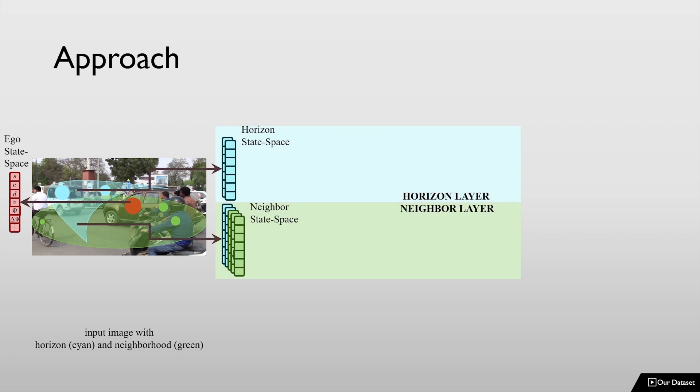Our network constitutes a horizon layer and a neighborhood layer. The horizon layer processes all the agents inside the horizon and models the horizon-based weighted interaction. The neighborhood layer performs a similar function for all the agents inside the entire neighborhood.